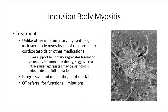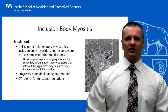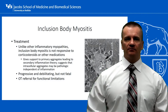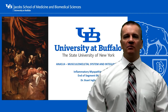Treatment options are limited for inclusion body myositis. Unlike other inflammatory myopathies, inclusion body myositis is not responsive to corticosteroids, which supports the theory that inflammation is secondary to the disease process — otherwise, controlling the inflammation should alleviate some of the symptoms. This means that little can be done to alleviate the natural progression of the disease. Fortunately, although progressive, the condition itself is not fatal. The patient should be referred to occupational therapy, who can work with the individual to develop orthotic devices and make accommodations to the living environment to help manage the condition.